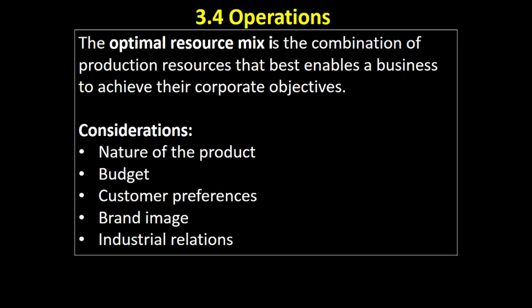When choosing our optimal resource mix, we'll have to consider the nature of the product, our budget — how much money we have to spend — and what our consumers would prefer: do they want high-quality handmade goods or are they happy with a low-cost, standardised product? We also need to consider our brand image — are we aiming at unique top-end products or are we a mass producing company — and industrial relations: do we have good relationships with our workers? All of these things will be considered by a firm when setting the optimal resource mix.